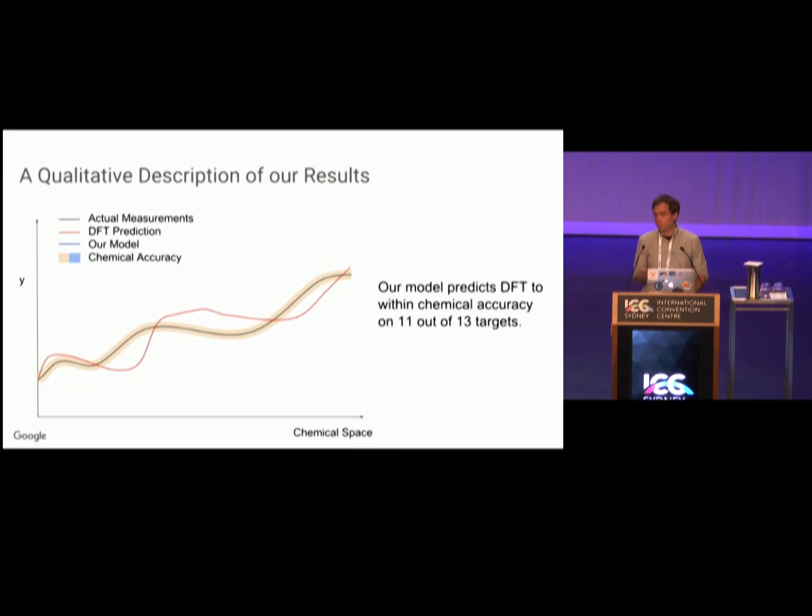DFT for many targets is not actually even within chemical accuracy of the target. But our model in blue is predicting DFT to within chemical accuracy. Basically, we're overfitting to the DFT calculation. This is why we believe future work should focus on either more accurate simulations or more varied molecular spaces.